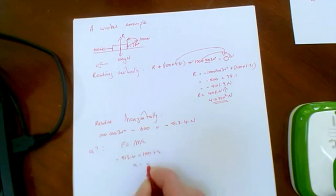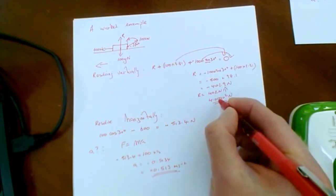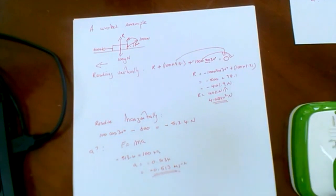So our acceleration then is minus 5.134, which to 2 sig figs, we could do to 3 sig figs, is minus 0.513 meters per second squared. And I should have done that to 3 as well, so 4.02 times 10 to the 2.